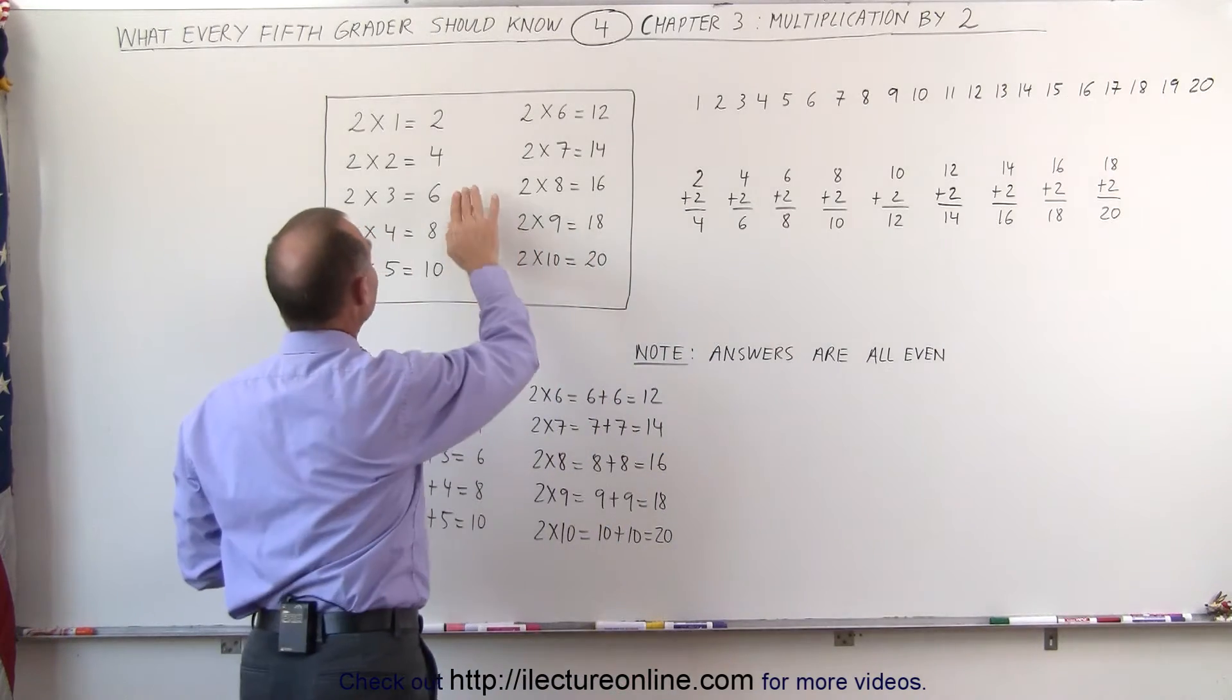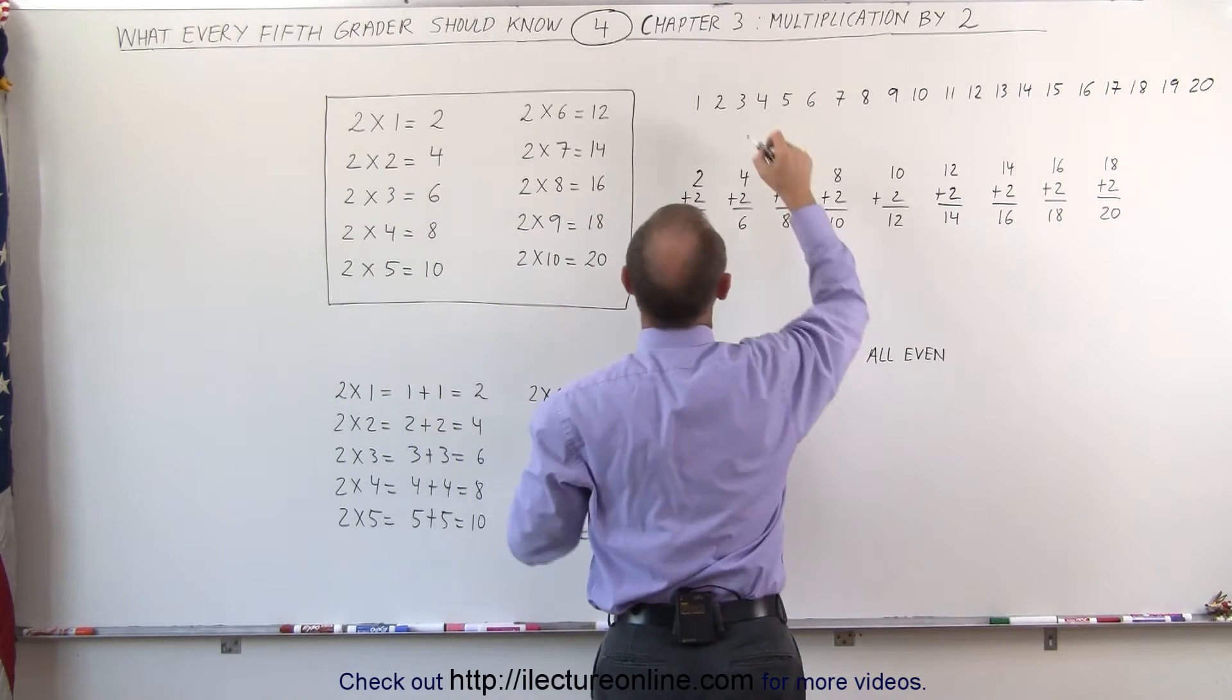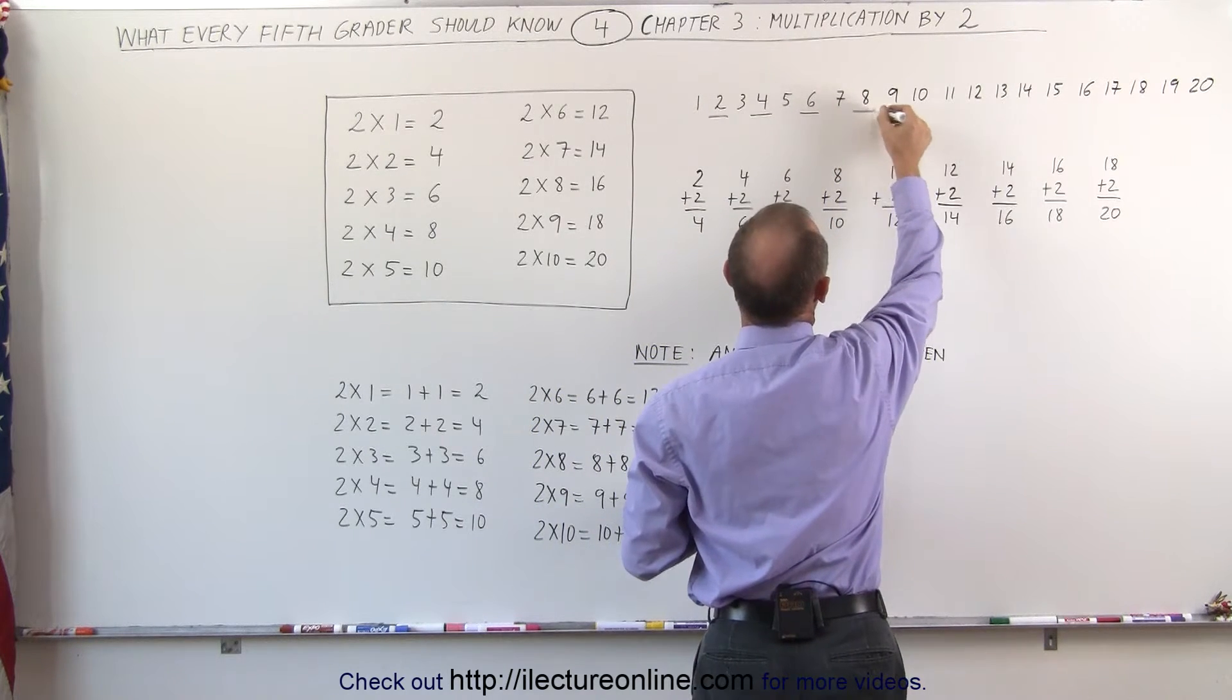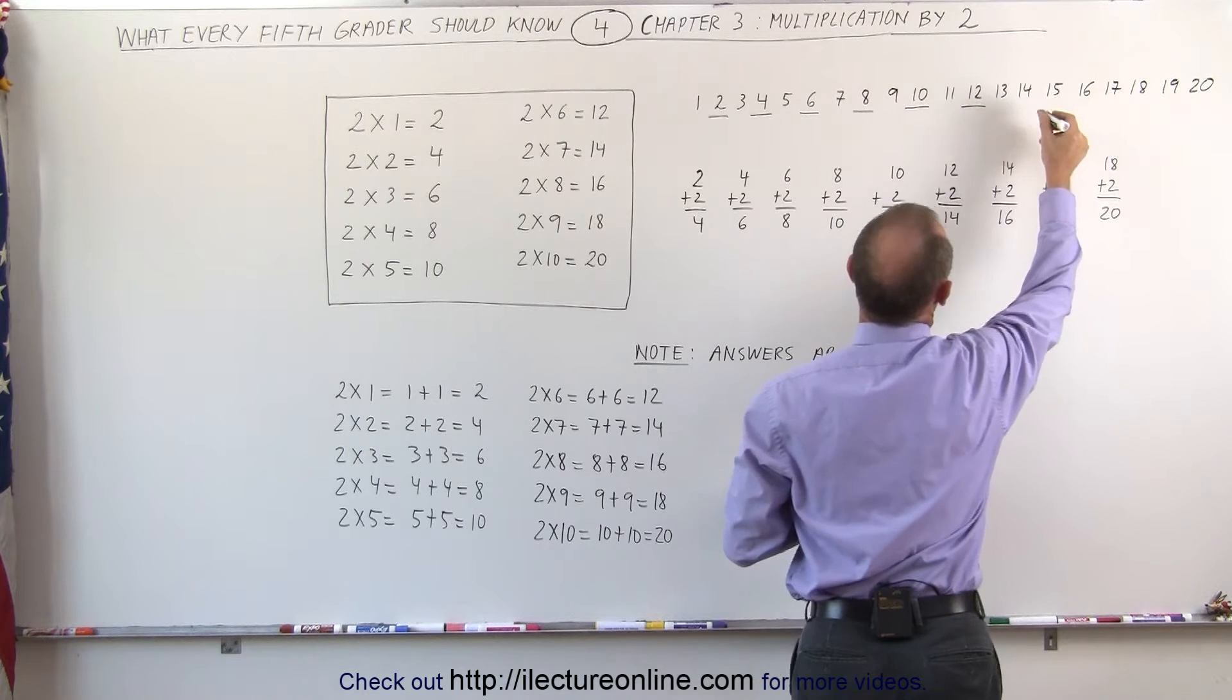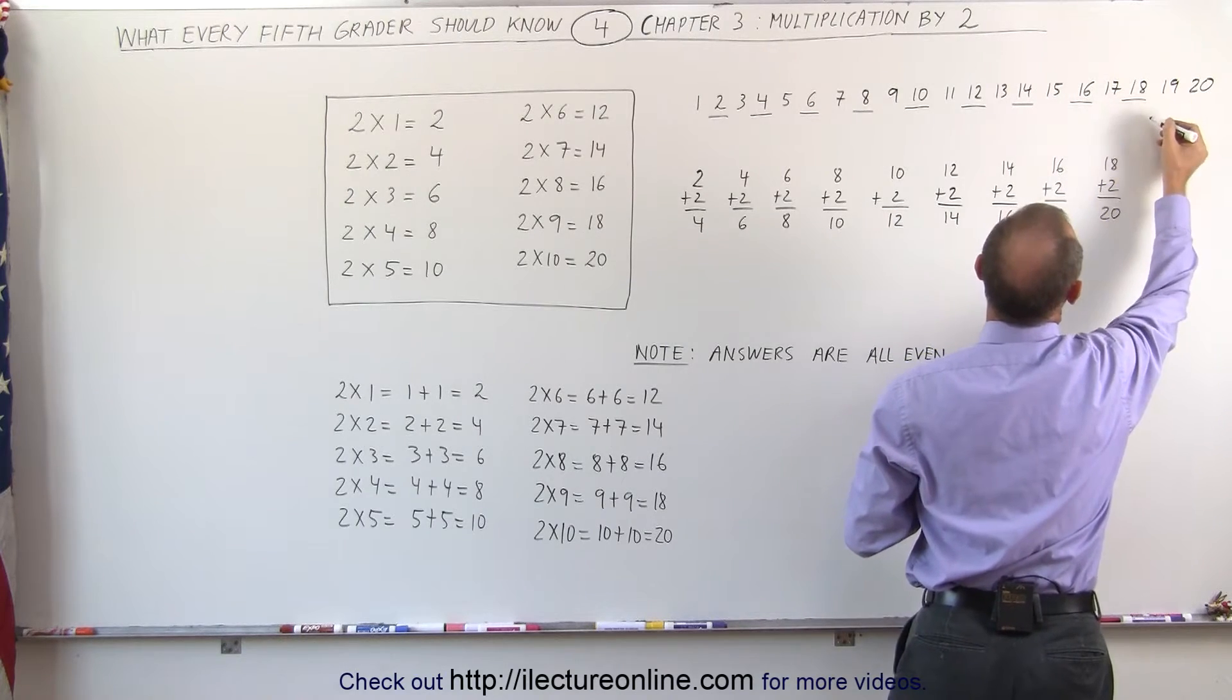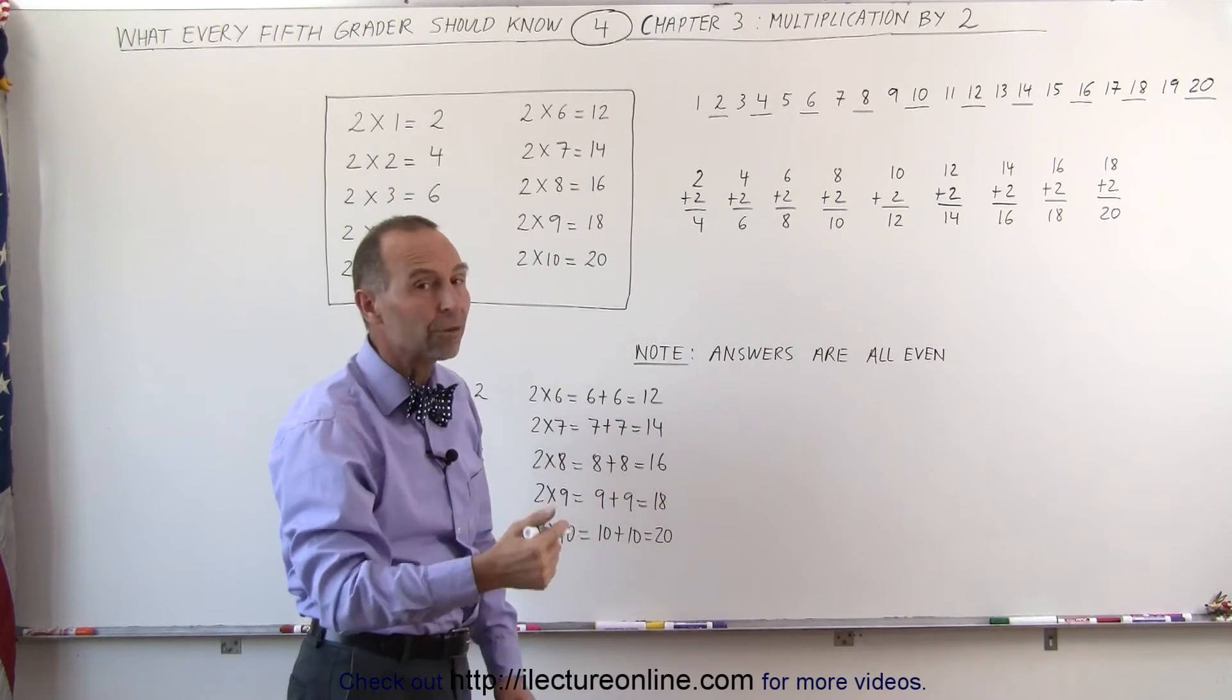The answer to the multiplication table when we multiply by 2 is always the even number. So 1 times 2, or 2 times 1 is equal to 2, 2 times 2 is equal to 4, 2 times 3 is equal to 6, 2 times 4 is equal to 8, 2 times 5 is equal to 10, 2 times 6 is 12, 2 times 7 is 14, 2 times 8 is 16, 2 times 9 is 18, and 2 times 10 is 20. So recognize it's every other number, all the even numbers are the answers.